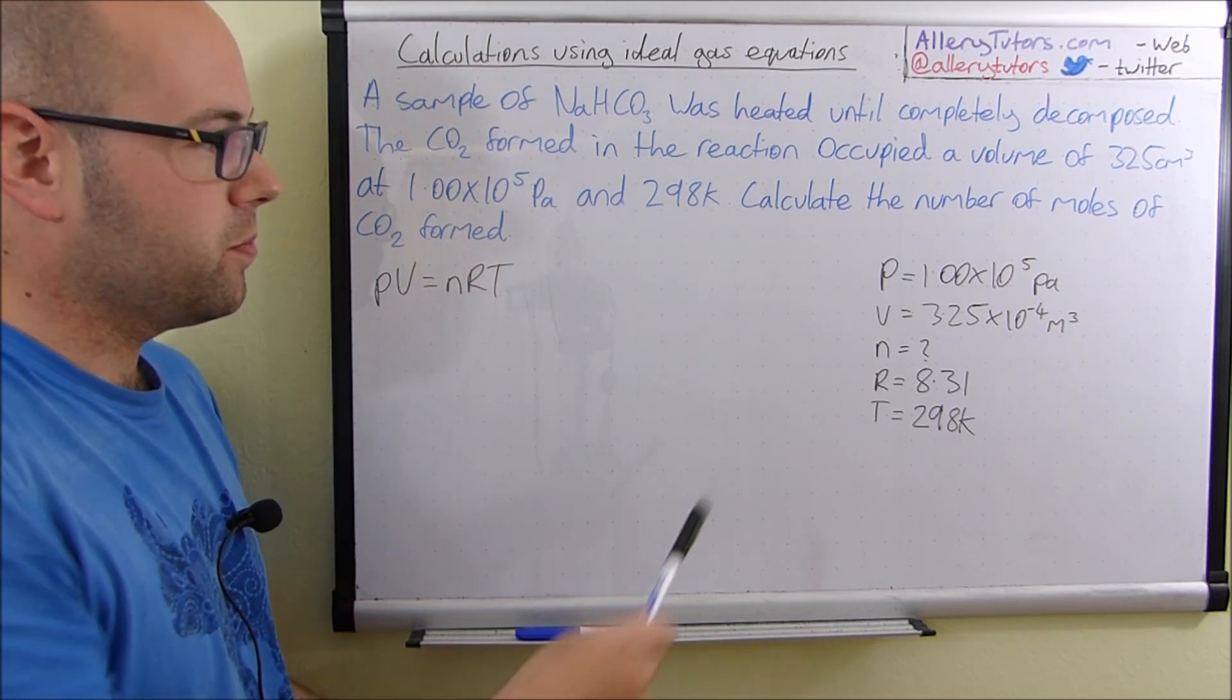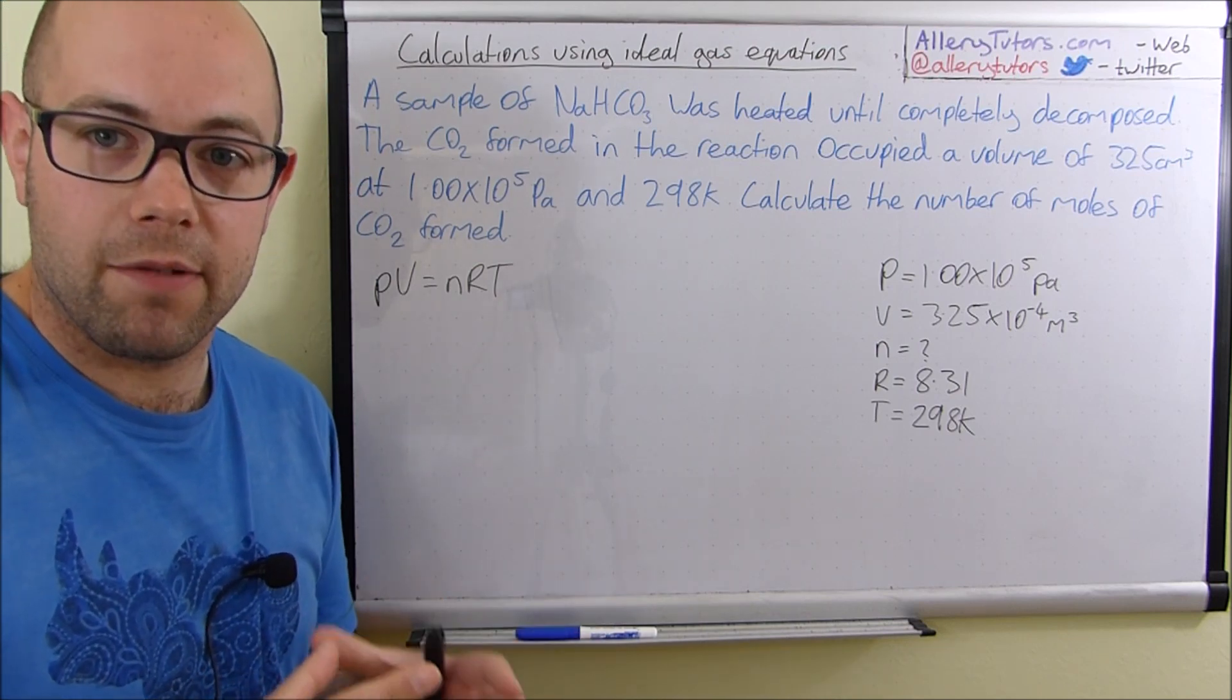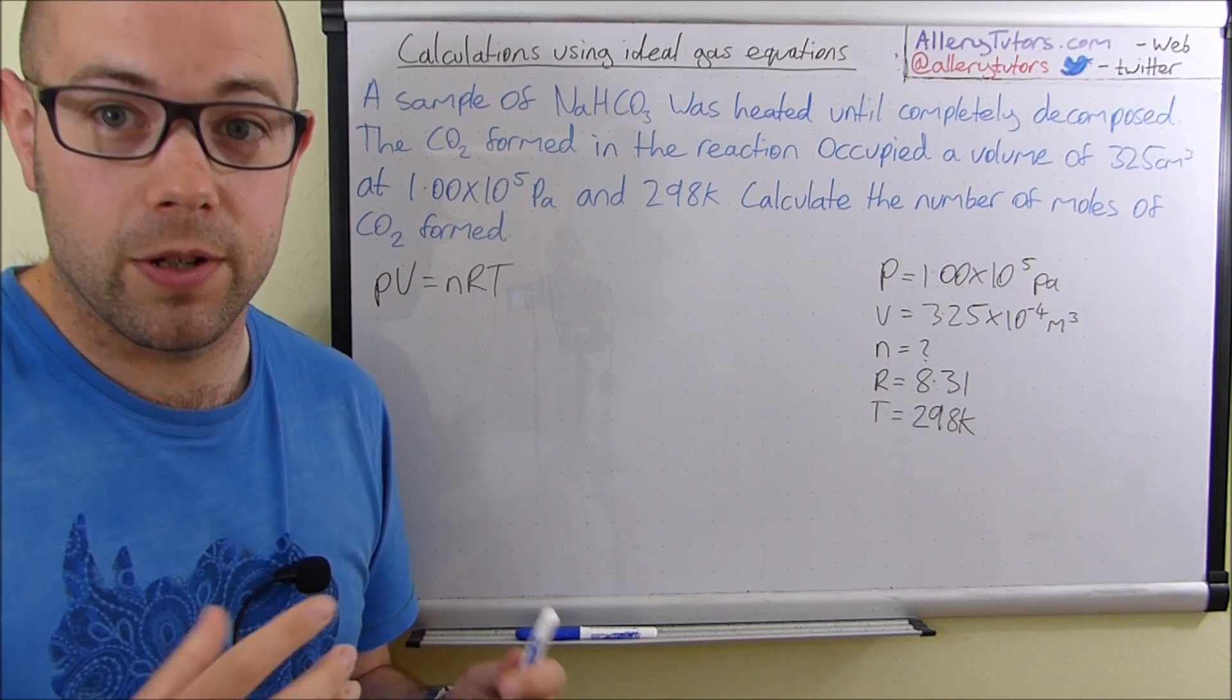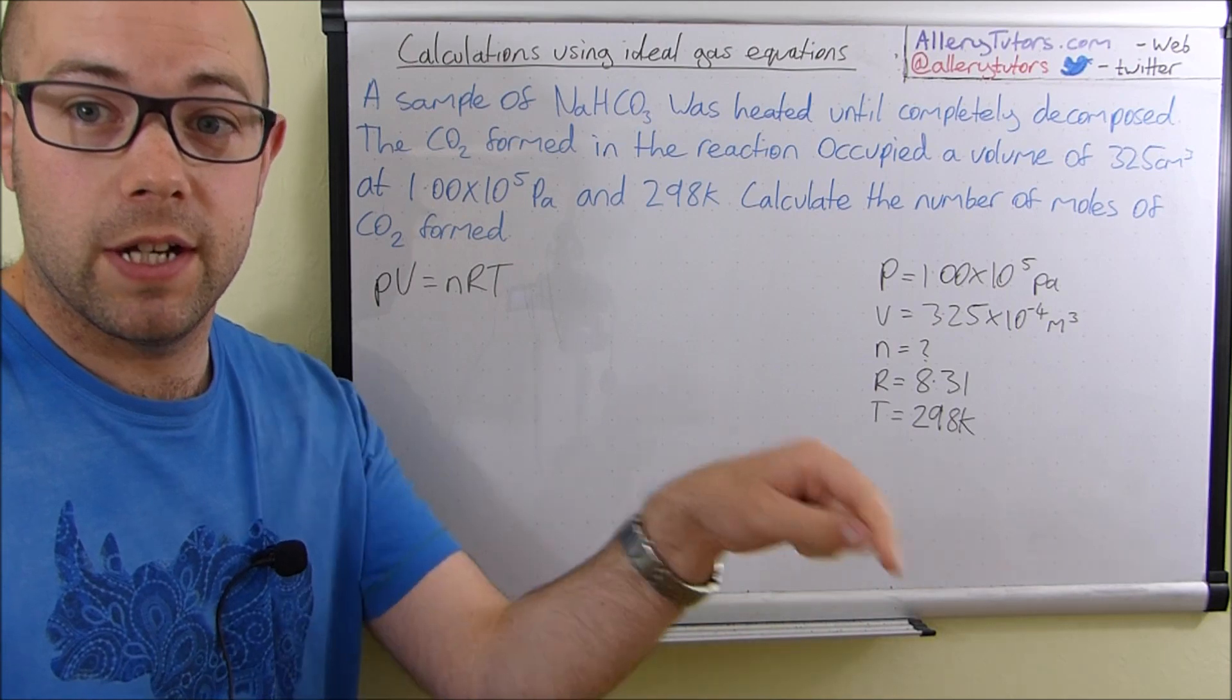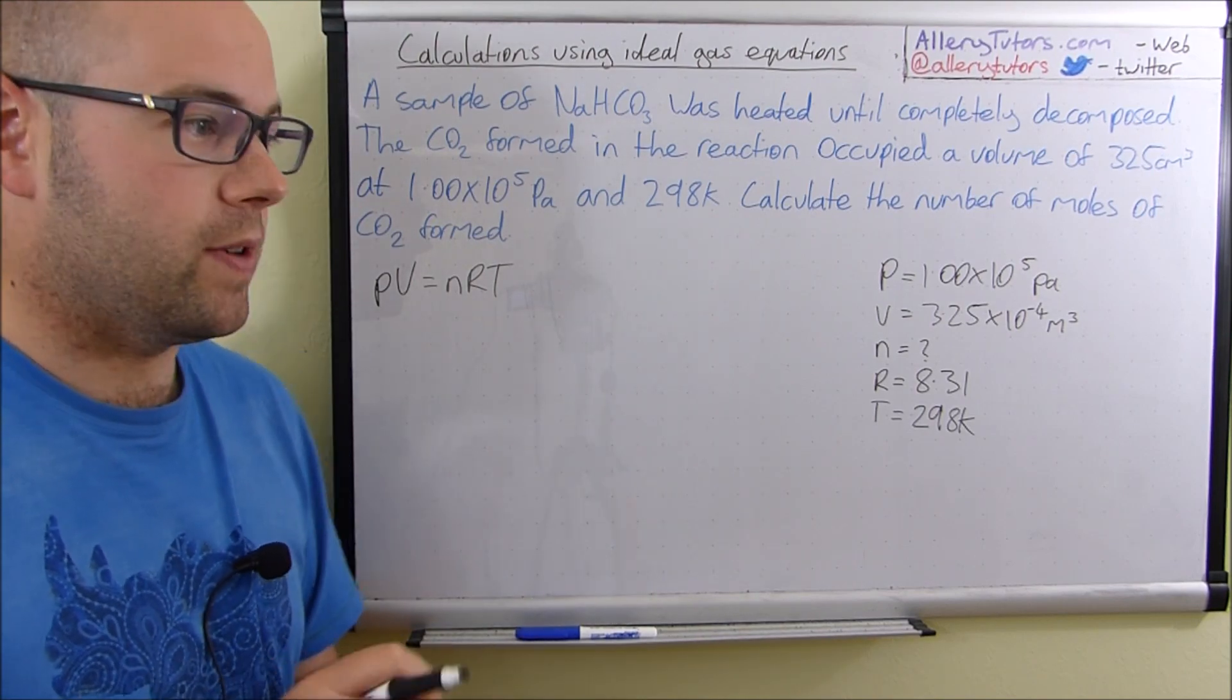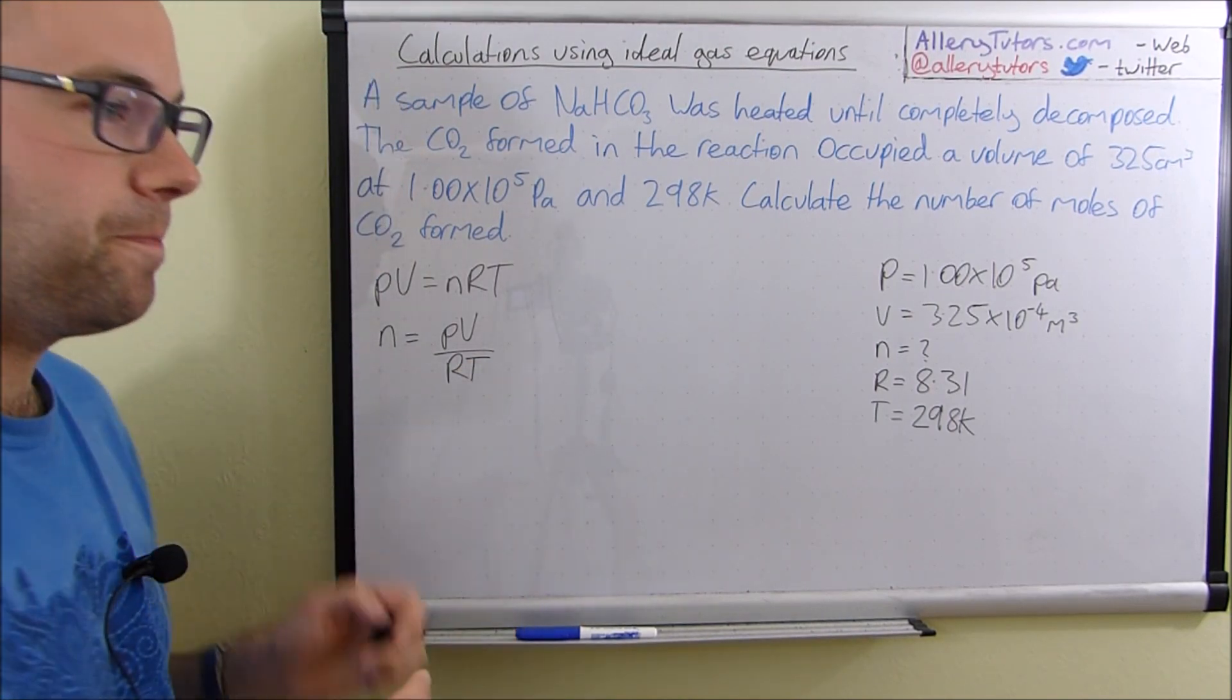What we have to do now is, because we need to work out n, we need to be able to rearrange this equation. This equation doesn't have n as the subject. Now, if you're not sure on how to rearrange ideal gas equations, some people may struggle with this. Some people really don't like rearranging equations. I've done a little video that looks into how you rearrange this properly. So if you want to have a look at that video on how I rearrange this, just click on the link below. But in this video, we're going to assume that you know how to rearrange it. So this one is pretty straightforward in terms of rearranging. So it's n equals PV over RT.